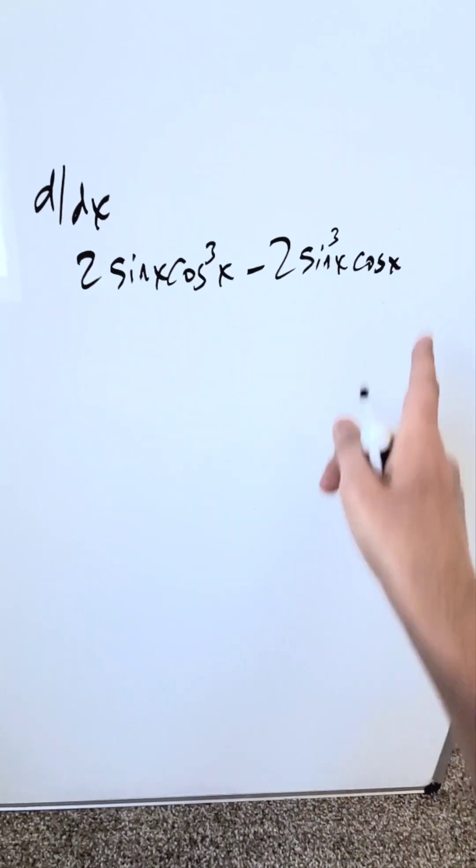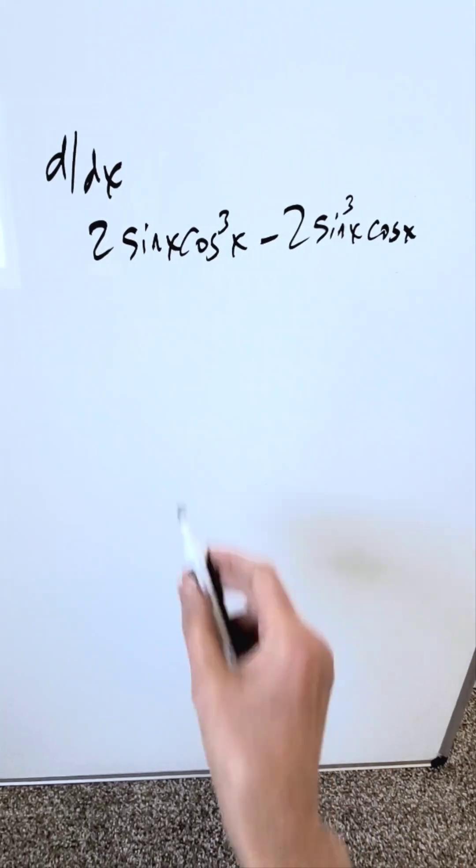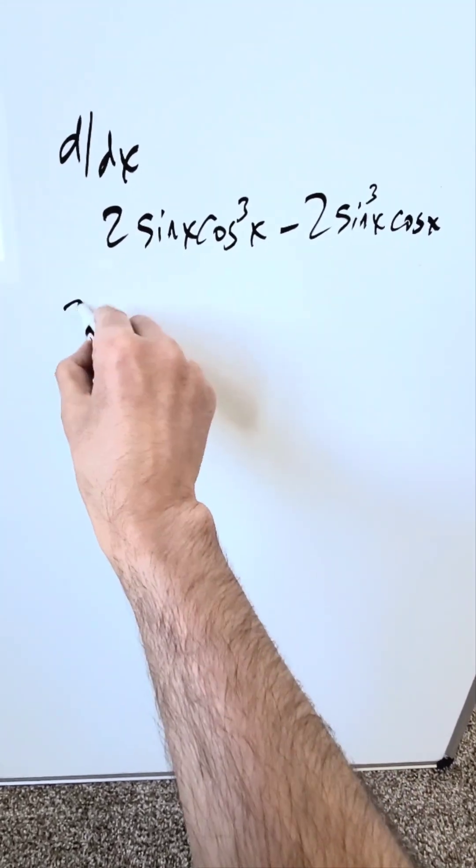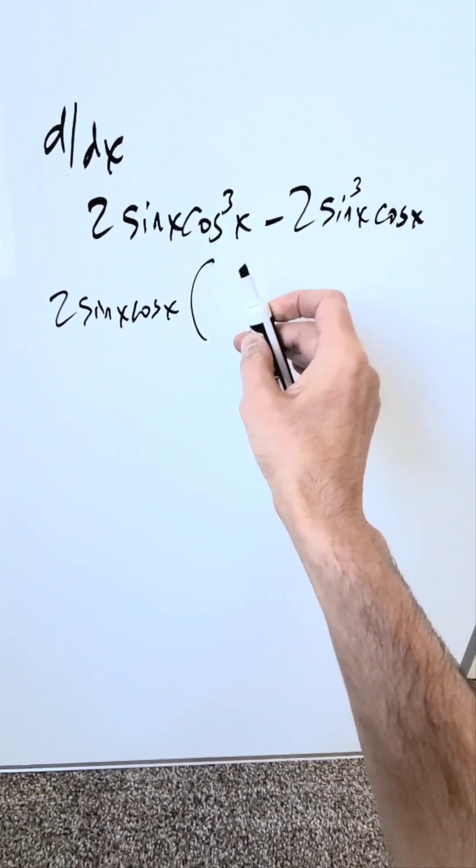How do I do the derivative of this? If you run the derivative through chain rule, product rule, all of that, it's difficult. Isolate your common terms. You'll find that you have a 2sin(x)cos(x), which can be plucked out from each term.